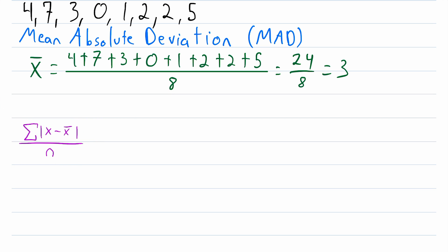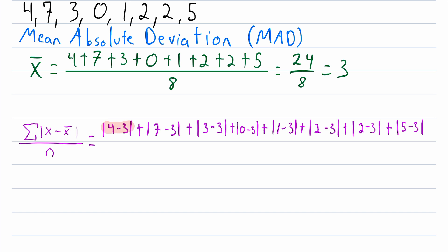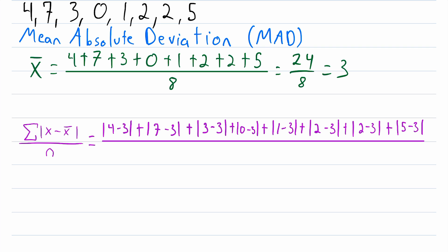Now let's calculate the mean absolute deviation for our example. MAD equals the absolute value of the first data point, 4 minus the mean 3, plus the absolute value of 7 minus 3, plus the absolute value of 3 minus 3, and so on for all data points. This is our numerator — we add up the distance between each data point and the mean. Then we divide by the total number of data points, which is 8.